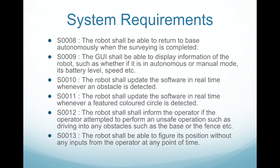The robot should be able to return to base when the job is done. The graphical user interface should display detailed information of the robot. The robot should be able to detect obstacles and update the system, as well as detect coloured circles, and inform the operator when an unsafe command is given. Lastly, the robot must be able to determine its location independently at any point in time.